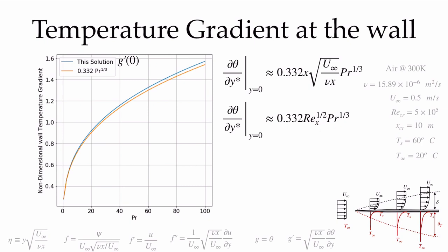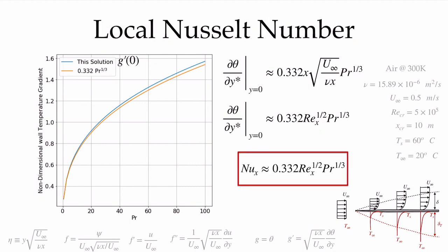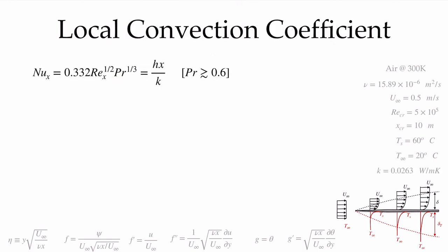The non-dimensional temperature gradient at the wall is approximately 0.332 * Rex^(1/2) * Pr^(1/3). Since this is by definition the local Nusselt number, we have: Nu_x = 0.332 * Rex^(1/2) * Pr^(1/3). This is valid for Prandtl numbers greater than 0.6 and approximately up to Pr = 100.